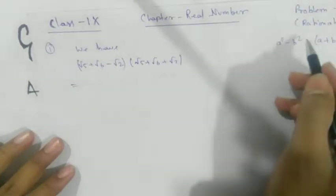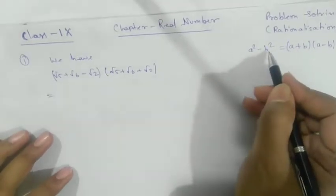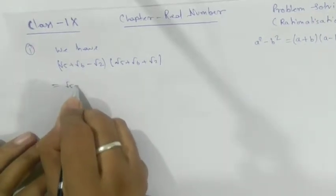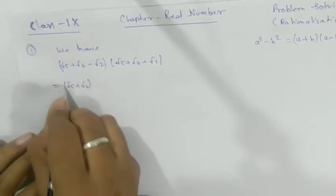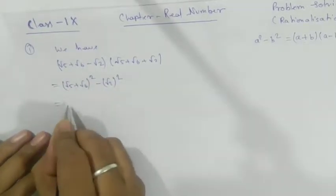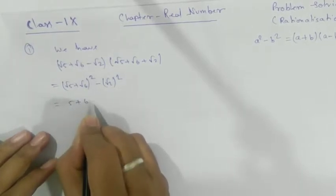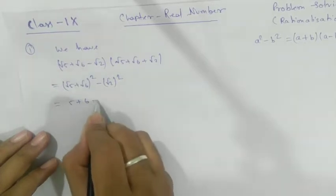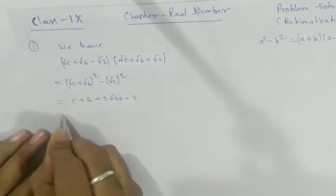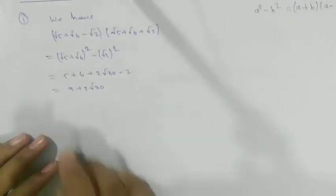Using the formula (a+b)(a-b) = a² - b², we proceed. Expanding a², we get a² + b² + 2ab, which gives us 9 + 2√30. But look here — we are still getting an irrational number.